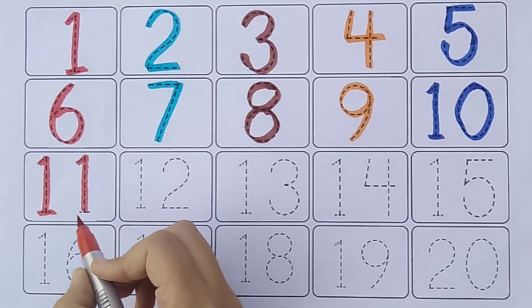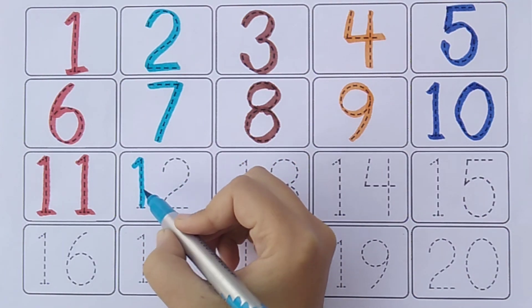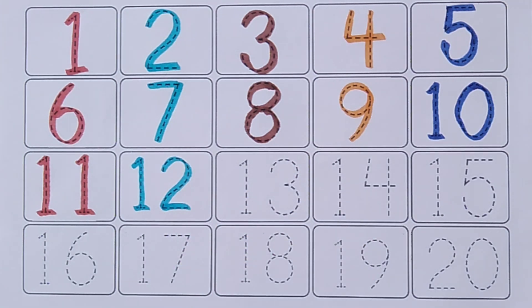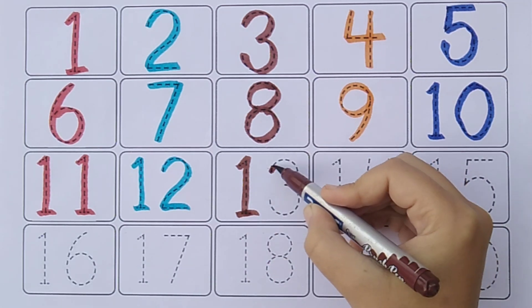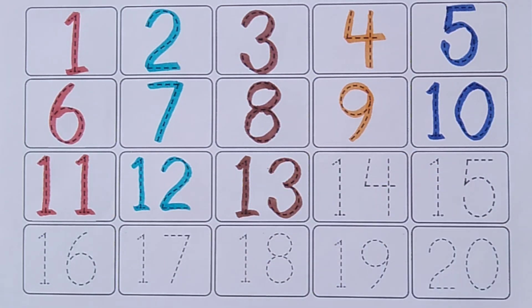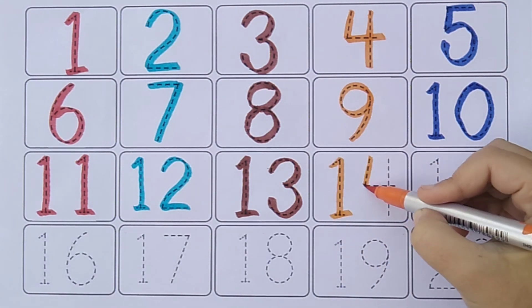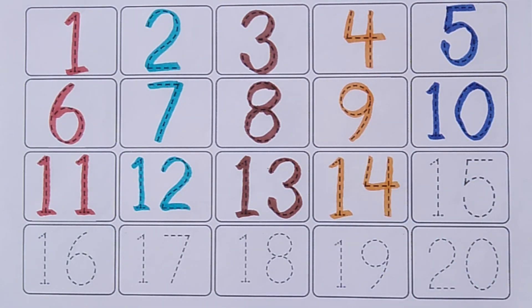One, one, eleven. One, two, twelve. One, three, thirteen. One, four, fourteen. One, five, fifteen.